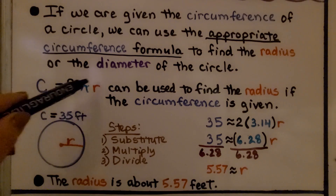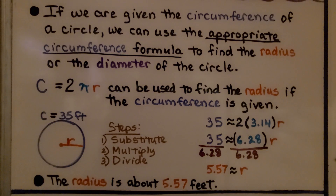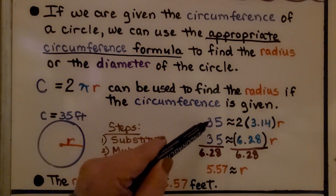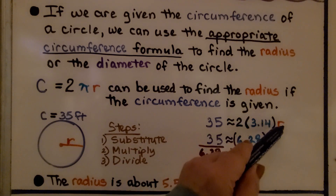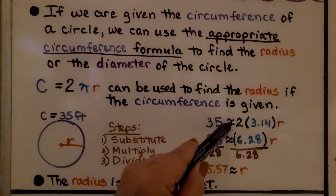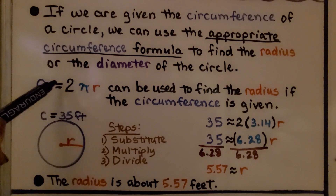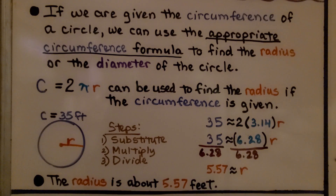We have C equals 2πr, where circumference is equal to 2 times pi times the radius. It can be used to find the radius if the circumference is given. Here we have a circle with a circumference of 35 feet. We substitute into the formula: 35 is approximately 2 times 3.14 times r. We use the approximation symbol because we're approximating pi as 3.14. We multiply 2 times 3.14 and get 6.28.